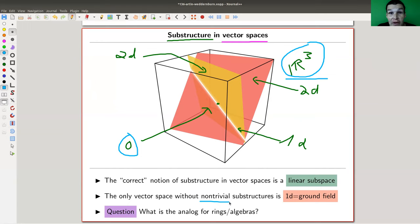So in any kind of theory, there will always be trivial substructures, and I'm always ignoring them. For vector spaces, a correct notion is a linear subspace. And what is a simple vector space? It would be the one without non-trivial substructures. But since you can always have a line somewhere, unless you are already a line, the only simple vector space is actually a one-dimensional space, which is really just the ground field.